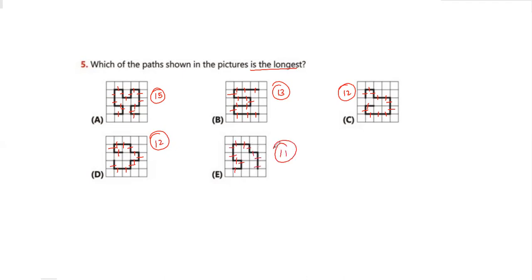The remaining path has eleven units. So comparing all paths, the largest number of units is fifteen, which is option A. The answer for question 5 is option A.